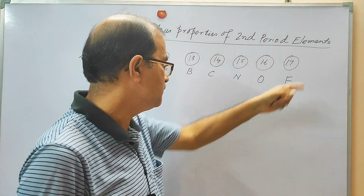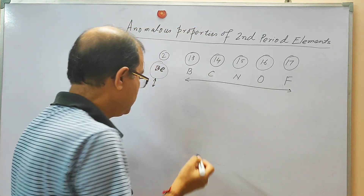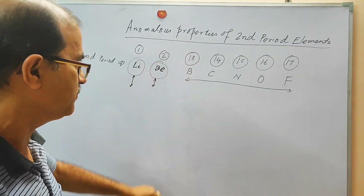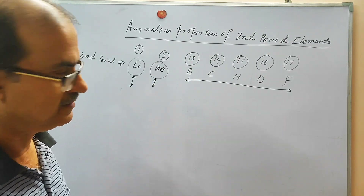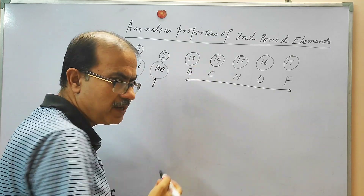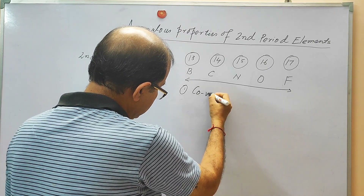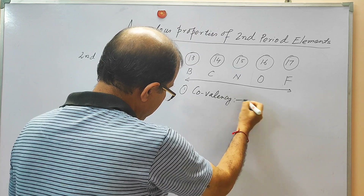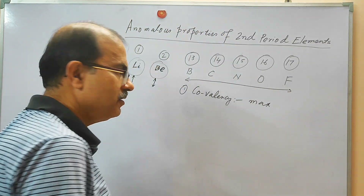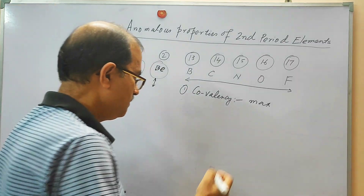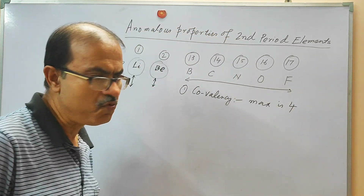In groups 13, 14, 15, 16, and 17, it is also observed that in these respective groups, the p-block elements — particularly carbon in group 14 and the first members of other groups — show different characteristics. The first characteristic is covalency. The maximum covalency shown by the first member of these p-block groups is 4.